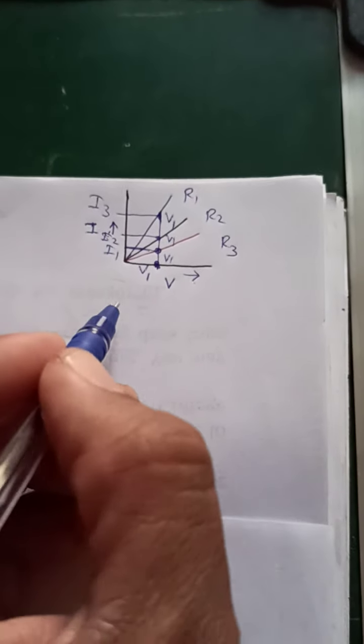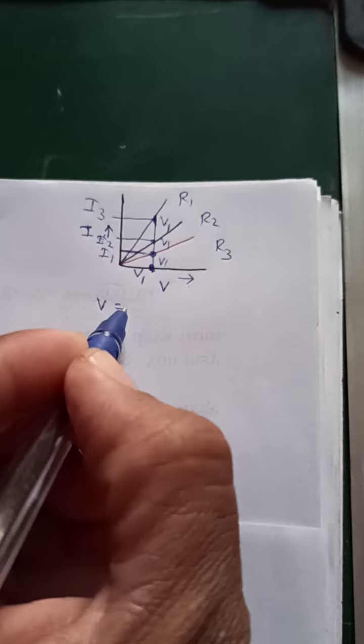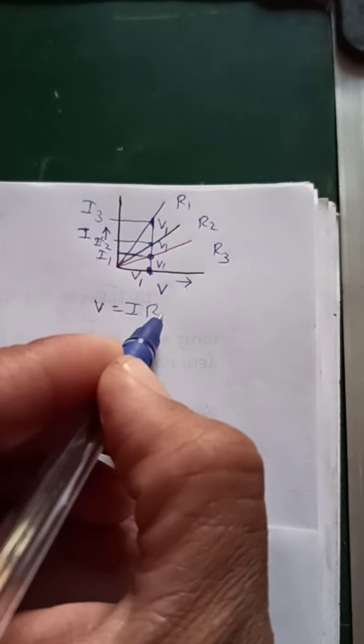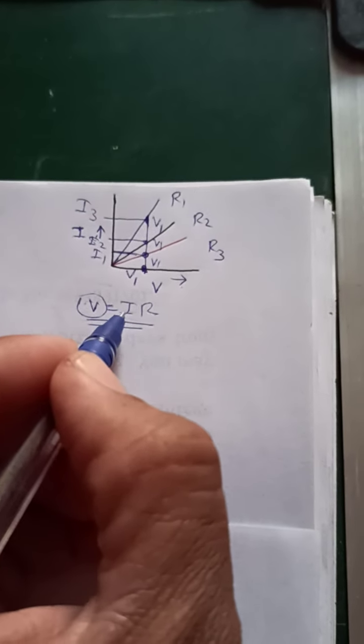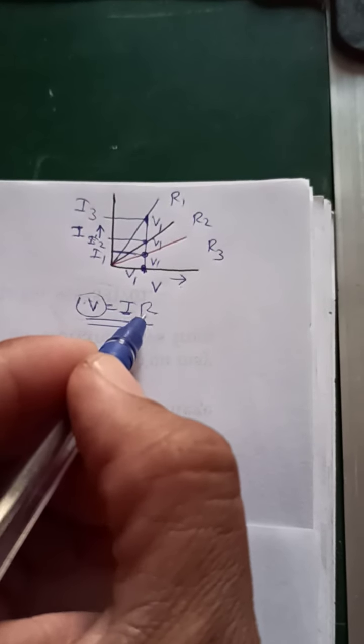Now apply Ohm's law: V equals IR. But remember, in all three cases, V is constant. This means I varies, and the resistance will change accordingly.